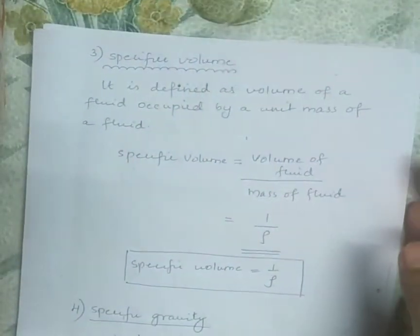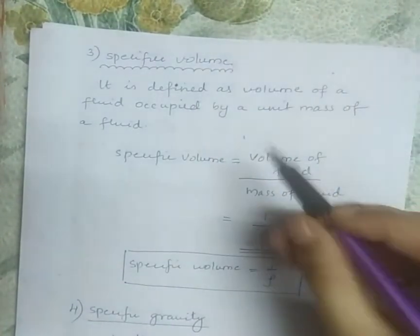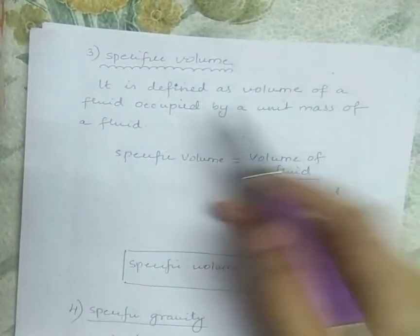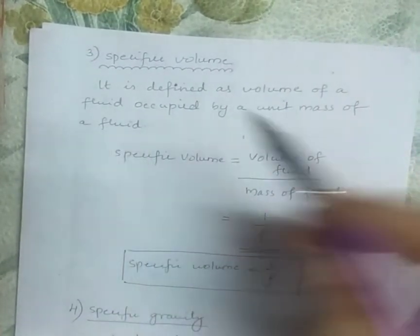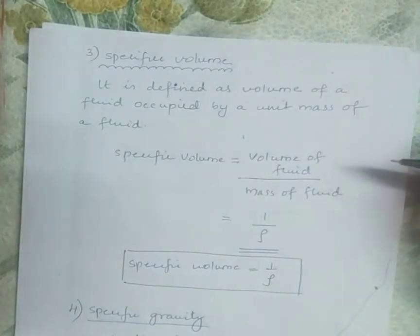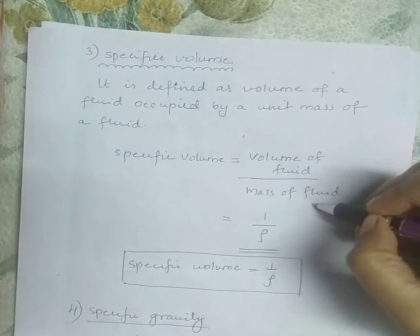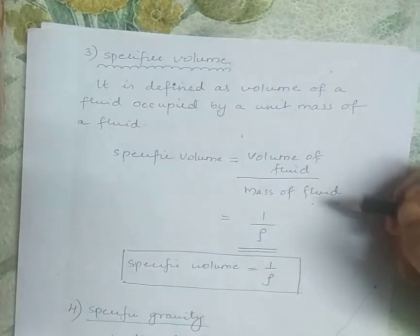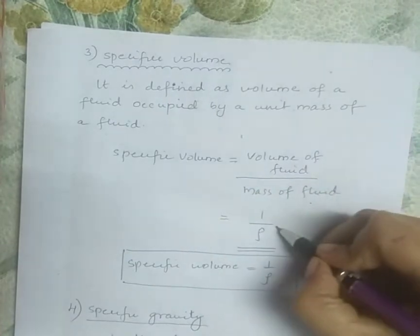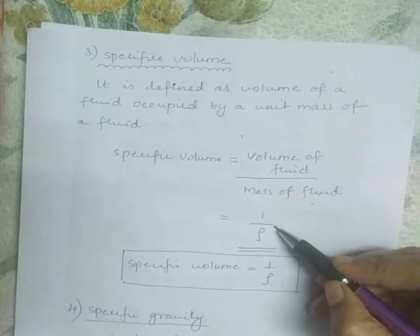The third property of fluid is specific volume. It is defined as the volume of fluid occupied by a unit mass of fluid. Mathematically it is expressed as volume of fluid divided by mass of fluid. Since mass divided by volume is density, specific volume is simply the reciprocal of mass density, so specific volume equals 1 by rho.